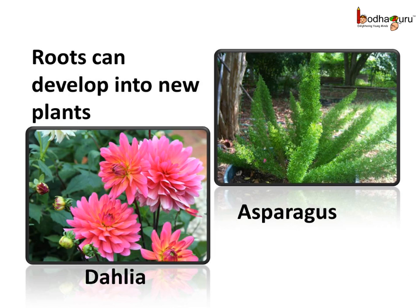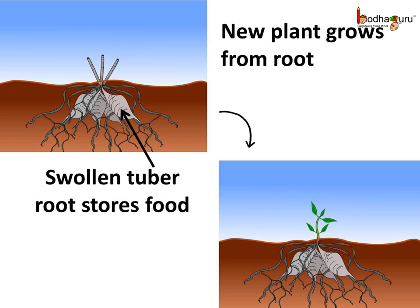In some plants, the roots help in reproduction. For example, the roots of dahlia and asparagus can develop into new plants. The dahlia plant stores excess food in its secondary roots, which get swollen — these are called tuberous roots. Sometimes the plant shoot dies but the tubers remain in the ground, and a new shoot may grow back from the tuber, helping in the multiplication of the plant. So the roots help in plant reproduction.